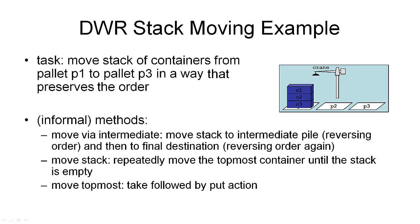Let me illustrate all this with another example taken from our dock worker robot domain. As you can see in this picture, this is a very simple problem. We have a single location with one crane, three piles, and three containers. Currently all three containers are in the first pile, and we want to move these containers to the third pile. So our task is to move a stack of containers from pallet P1 to pallet P3, preserving the order of the containers. Clearly, this is a task we cannot achieve with any of the actions previously described — it is a more complex task.